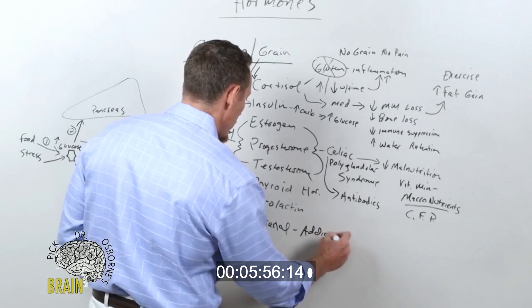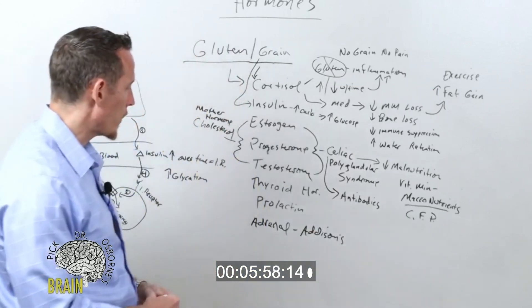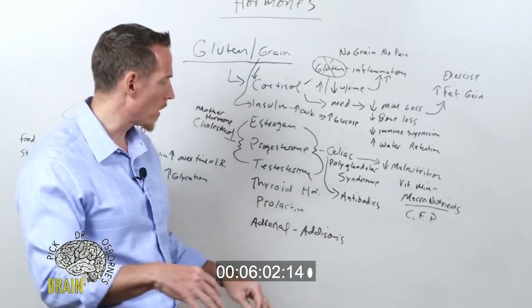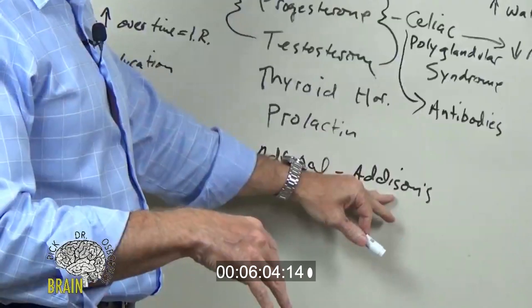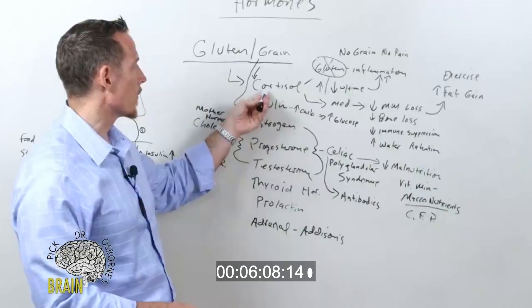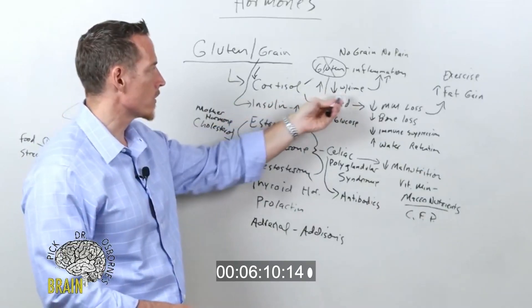Which is an autoimmune disease of adrenal hypofunction, so the adrenals lose their function. Now many of you may have heard of adrenal fatigue before. Addison's is not the same thing as adrenal fatigue. Adrenal fatigue is when you lose adrenal reserve and your cortisol over time starts to drop, whereas